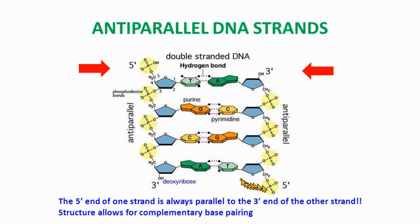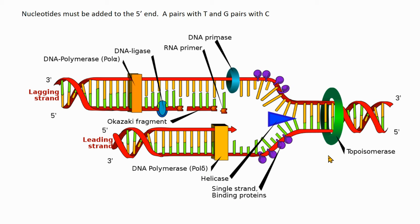So the five prime end is at the top of one strand, and the three prime end is at the bottom. On the opposite strand, the three prime end is at one end and the five prime is at the other — they're parallel but opposite, anti-parallel. This has ramifications for replication. The helicase protein unravels the DNA and breaks those weak hydrogen bonds between the complementary base pairs.